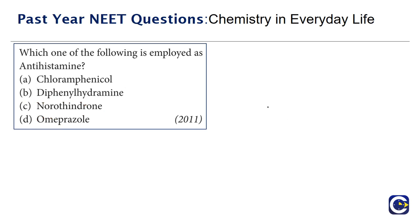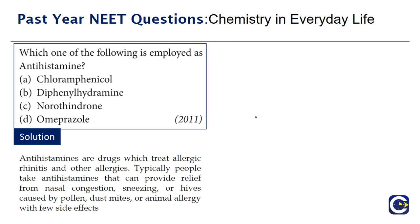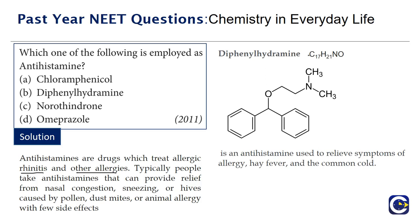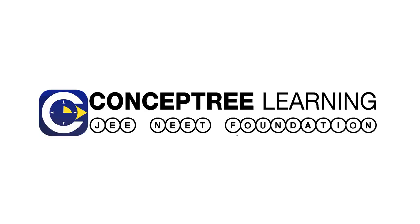From the 2011 paper: which one of the following is employed as an antihistamine? Antihistamines are drugs that treat allergic rhinitis and other allergies, providing relief from nasal congestion, sneezing, and hives caused by pollen, dust, or animal allergies. The compound diphenhydramine, with formula C17H21NO and its structure shown here, is a popular antihistamine used to relieve symptoms of allergy, hay fever, and the common cold. The correct answer is option B, diphenhydramine.